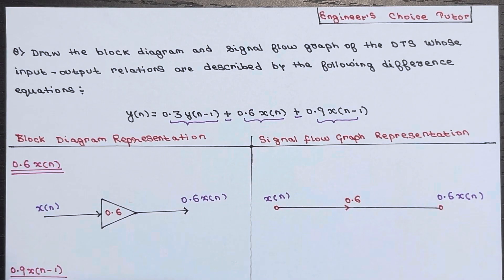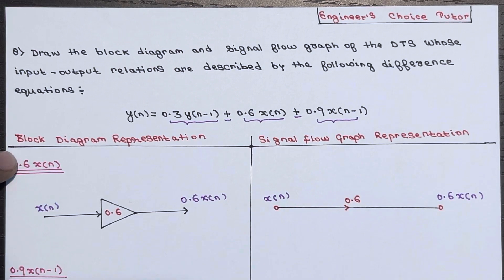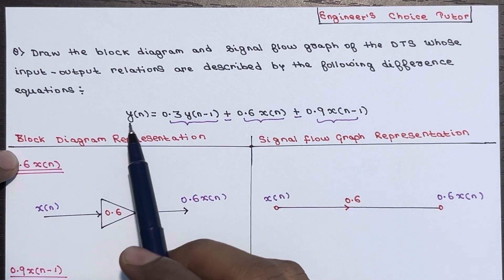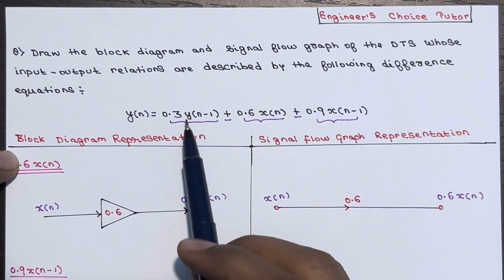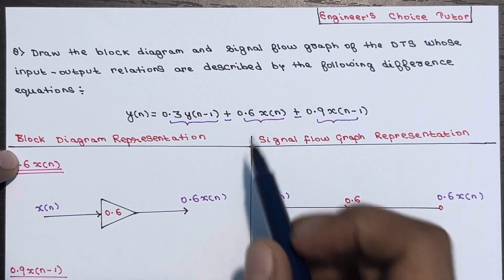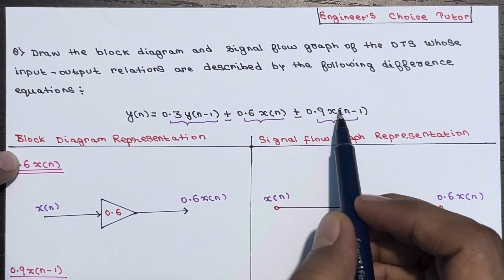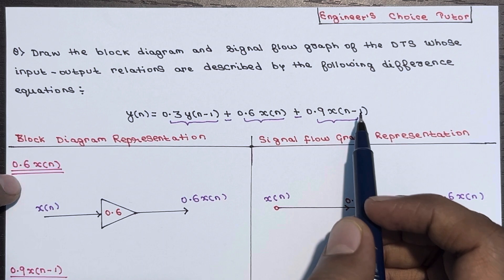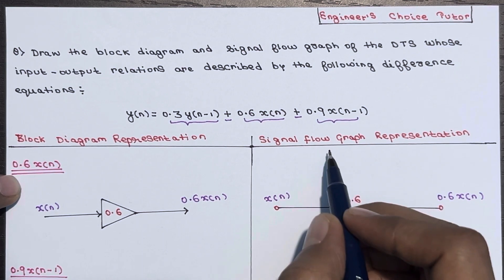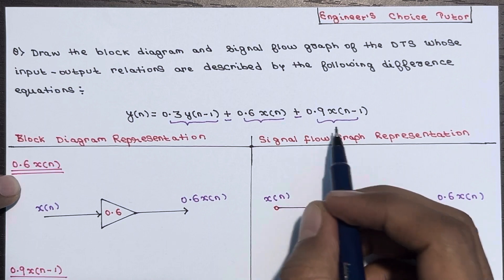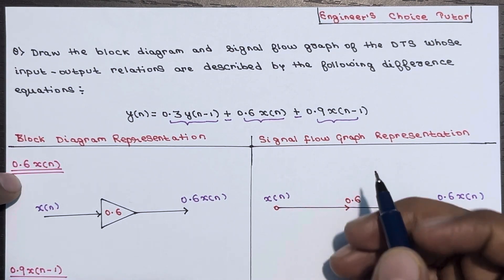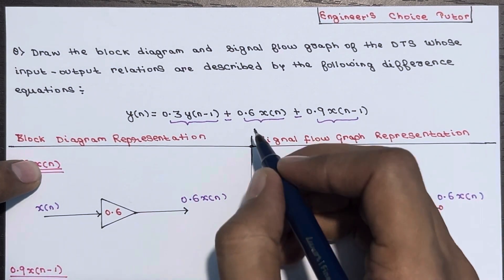Hi everyone. In this lecture we will see another numerical based on block diagram and signal flow graph of the discrete time system. The difference equation is given as y(n) = 0.3·y(n-1) + 0.6·x(n) + 0.9·x(n-1). We have to draw the block diagram representation as well as the signal flow graph representation.